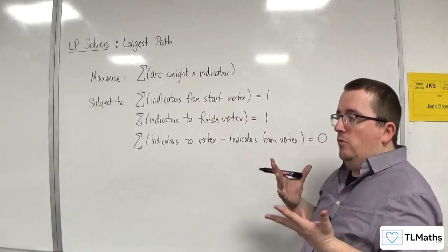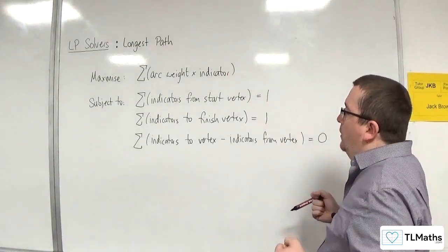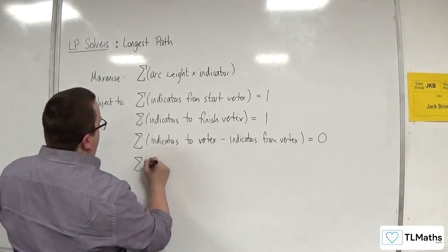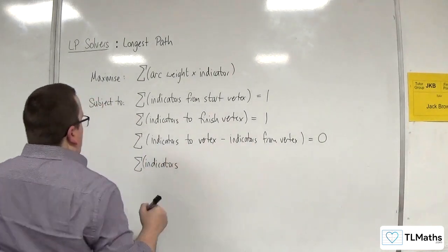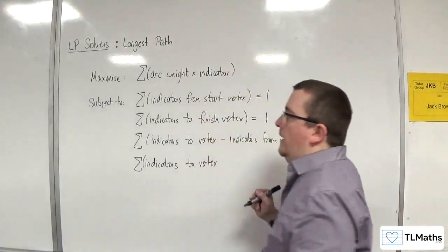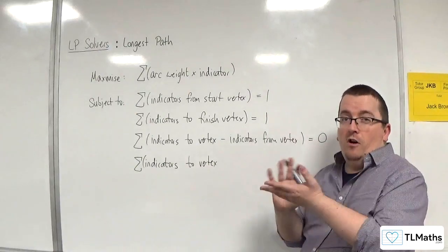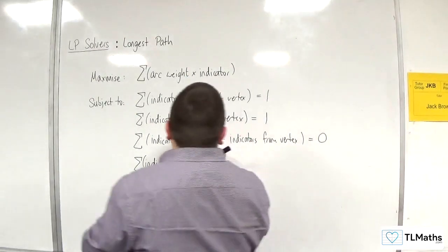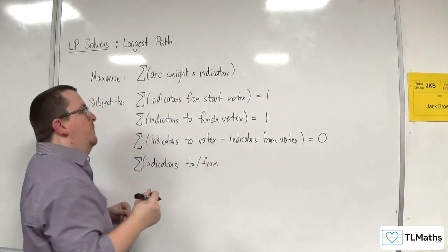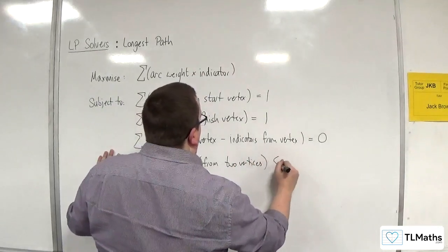So then the final type of constraint that we've got to deal with are all those potential repeating edges. So for each of those potential repeating edges, we want the indicators to and from the two vertices. And that's going to be less than or equal to 1.